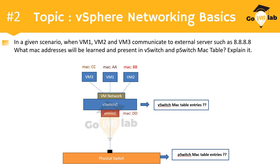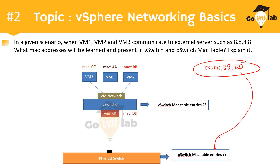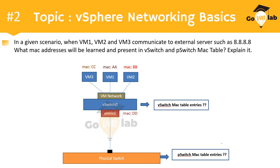We asked this question to many learners through various forums. Some answered that the physical switch will have MAC addresses CC, AA, BB, and DD, while the virtual switch will have CC, AA, and BB. Others answered that the physical switch will have only the DD MAC address while the virtual switch will have AA, BB, and CC MAC addresses.